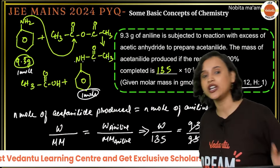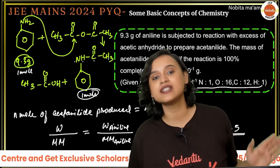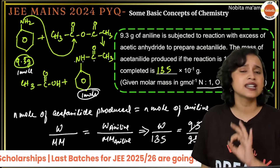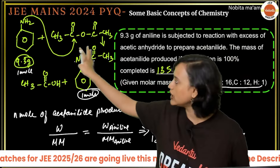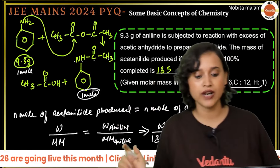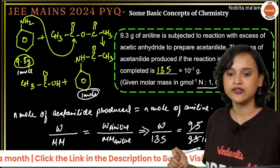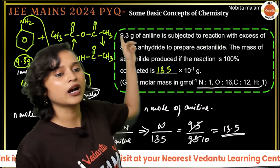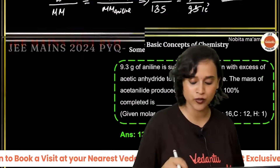The only tough part here is that you need to know the chemical reaction when aniline reacts with acetic anhydride. That particular reaction will be taught in the chapter on amines — don't worry, we will be doing that also very soon.